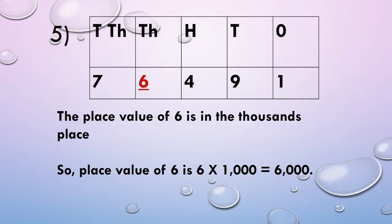Fifth example: let us take 76,491. We write 76,491 in the place value chart as: digit 7 in the 10,000's place, digit 6 in the 1000's place, digit 4 in the 100's place, digit 9 in the 10's place, digit 1 in the 1's place. The underlined digit 6 is in the 1000's place, which means there are 6 thousands, so its place value is 6 multiplied by 1000, that is 6,000.